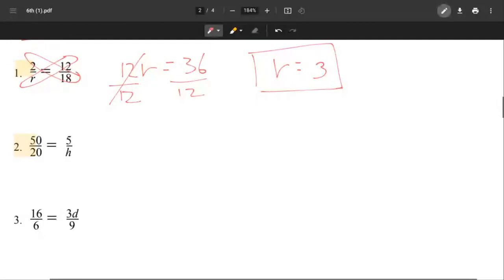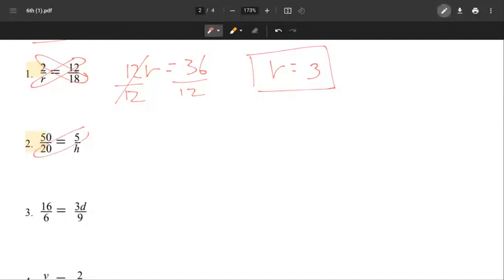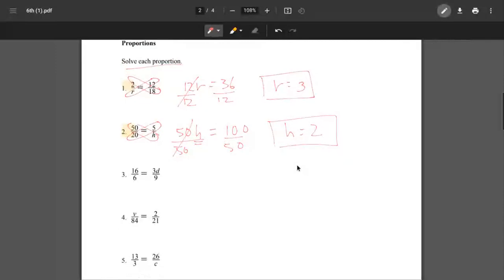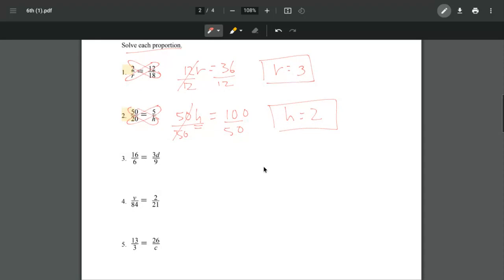Number 2, again we're going to cross multiply, so that becomes 50h equals 200. Now we're solving for h, so we divide both sides by 50 this time. That cancels out, and we have h equals 2. Just cross multiply and then solve for the variable.